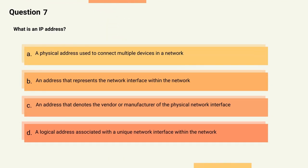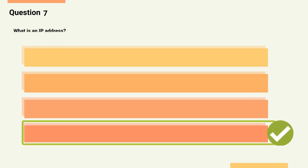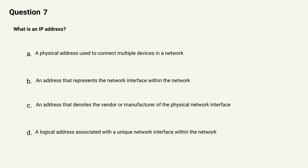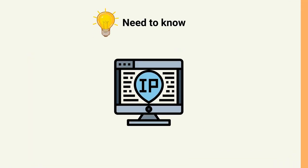Question 7: What is an IP address? Options: A) A physical address used to connect multiple devices in a network, B) An address that represents the network interface within the network, C) An address that denotes the vendor or manufacturer of the physical network interface, D) A logical address associated with a unique network interface within the network. The correct answer is Option D. Explanation: While MAC addresses are generally assigned in the firmware of the interface, IP hosts associate that address with a unique logical address. This logical IP address represents the network interface within the network and can be useful to maintain communications when a physical device is swapped with new hardware.